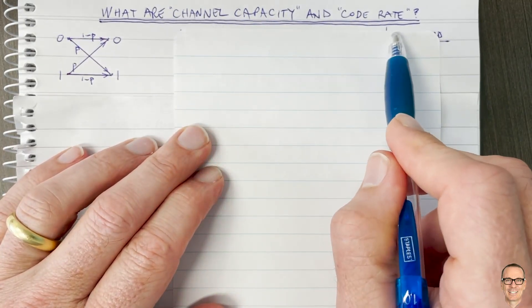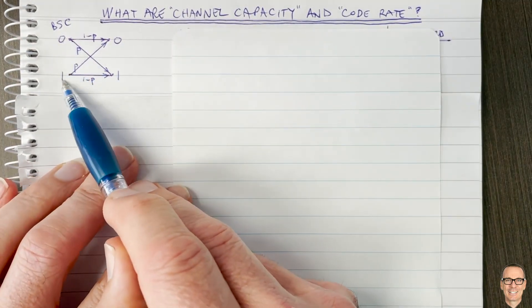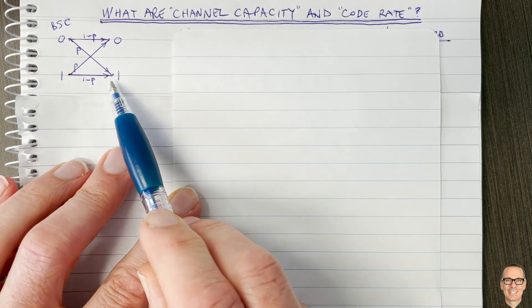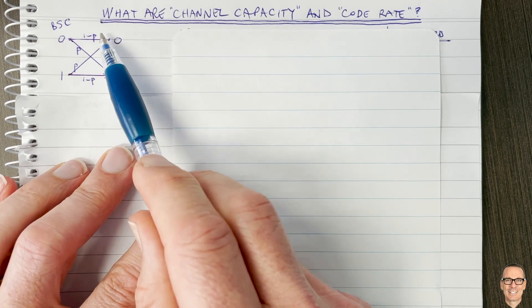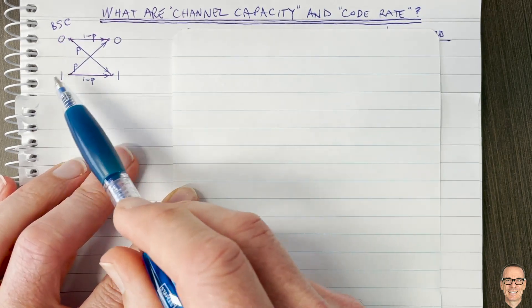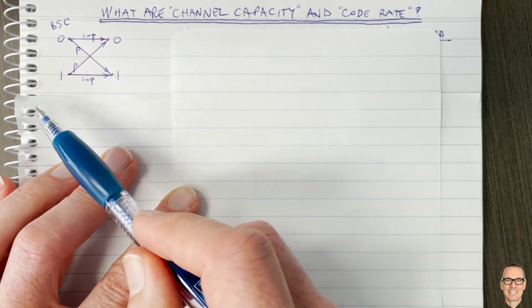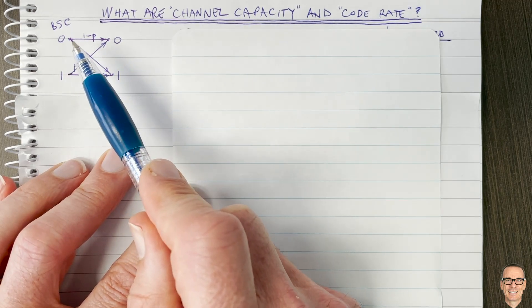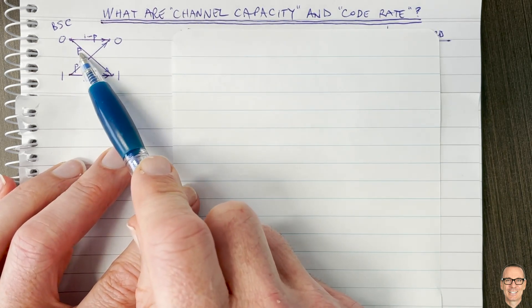What are channel capacity and code rate in communication systems? Let's start by looking at the binary symmetric channel. This channel has zeros and ones that can go in, and zeros and ones that come out, with a probability p that an error will be made. If a zero goes in, there's a probability p that a one will come out. This channel is limited to zeros and ones on the input. How do we overcome those errors? For many years, it was thought the way to do that was to reduce p by increasing the transmitting power — if you increase transmit power, the noise has less effect and you end up with a smaller value of p.